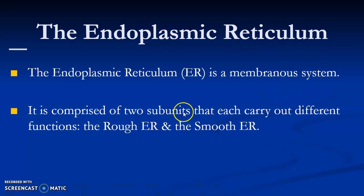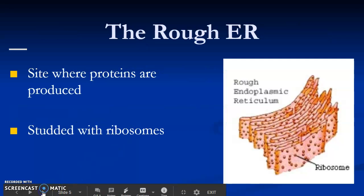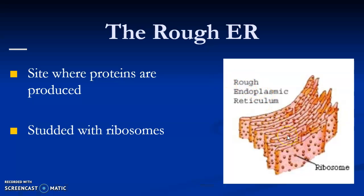The ER has two parts that are very different from each other, so we don't want to get them confused. The rough ER is where proteins are produced — it is studded with ribosomes, which produce these proteins. It gets its name 'rough' because of the ribosomes. Just remember: if you rubbed your hand across it, you would feel bumps — it would feel rough.